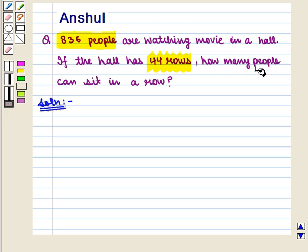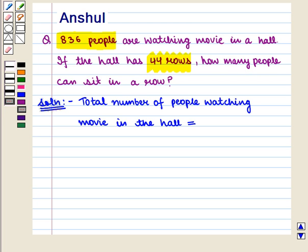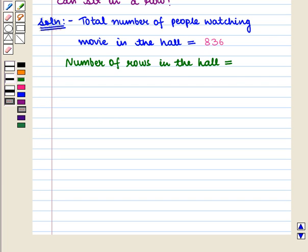We have to find how many people can sit in a row. So we write: total number of people watching movie in the hall are 836 and number of rows in the hall are equal to 44.